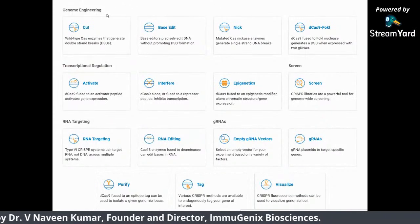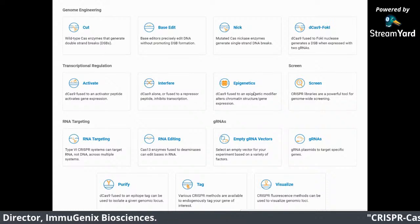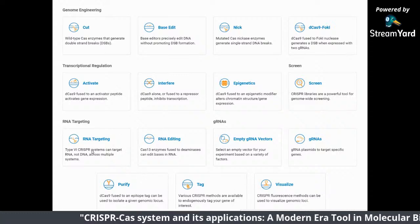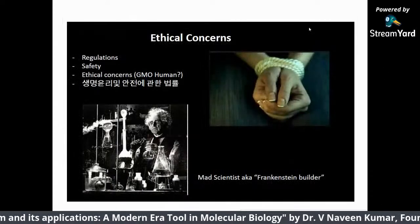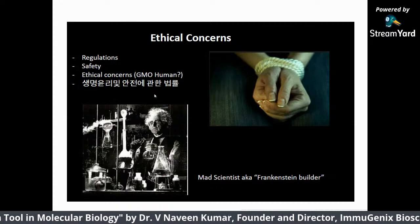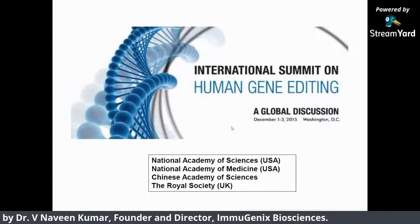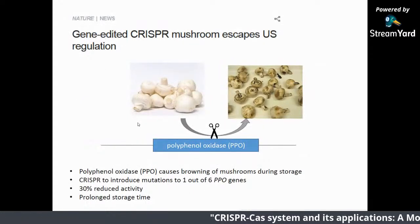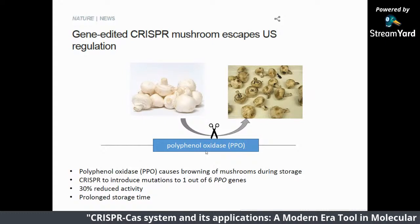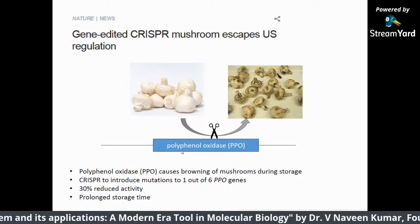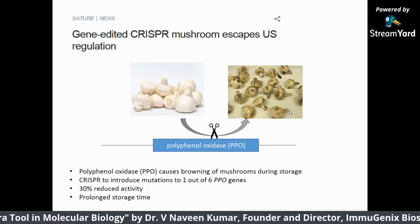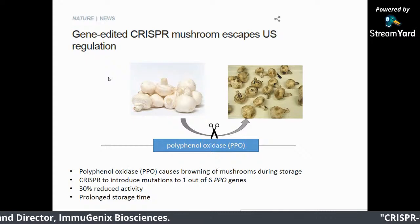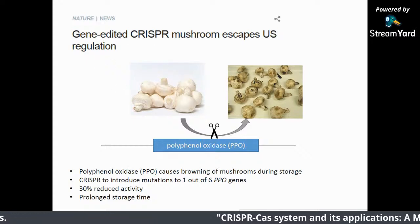To summarize: using CRISPR you can cut, base edit, use for epigenetics, activate gene expression, interfere with gene expression, screen, purify, edit RNA, and visualize. But finally, there are a lot of ethical concerns when you go for human modification — you need to be careful. There is a global key for gene editing. One example of escaping regulation is the mushroom modified to knock out polyphenol oxidase — responsible for browning. In the US, since no new gene was introduced into the organism, it is not considered a GMO and escaped regulation. Thank you so much — if you have any questions, I'm happy to answer.